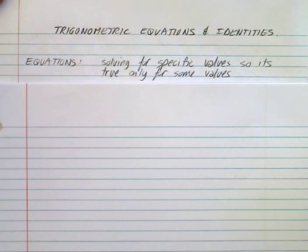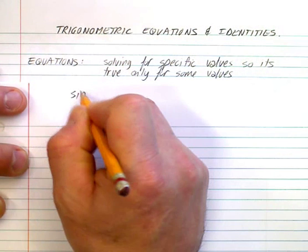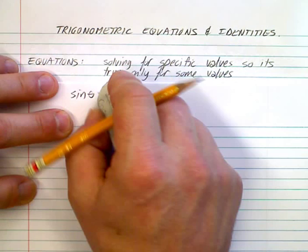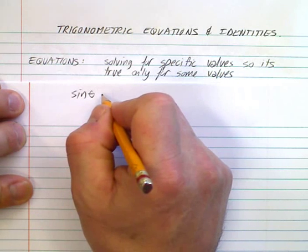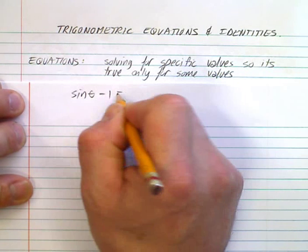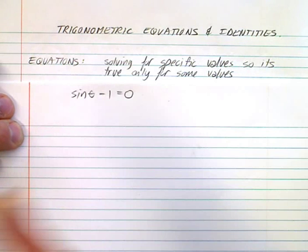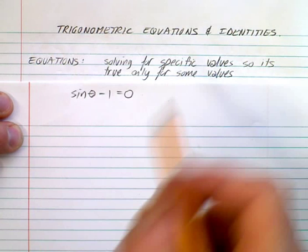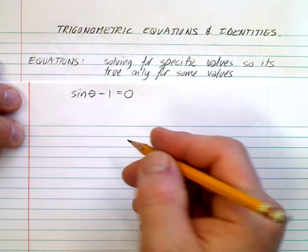Let's look at a couple of definitions. First of all, an equation — when you solve for an equation, say something like sine theta equals 1, or sine minus 1 equals 0. We make equations often equal to 0 and we're looking for where they cross the x-axis. These have specific values, so it's only true for specific values of theta.